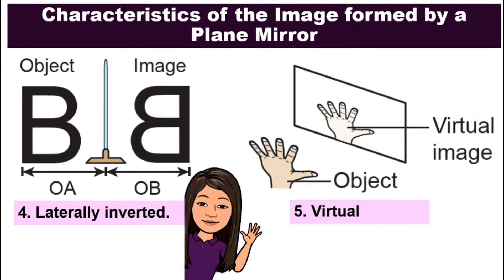And finally, number five, the image that is formed is a virtual image. That means the image that cannot be formed or projected to a screen.